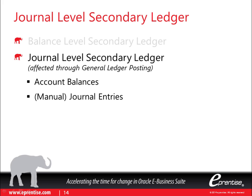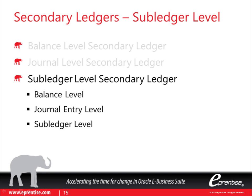Journal-level secondary ledger posting is actually effected through the standard general ledger posting functionality. Next, there are subledger-level secondary ledgers. This is the most transparent of all the secondary ledger types. The subledger-level secondary ledger lets you maintain not only the balance level and the journal entry level available in the first and second types, but it also allows you to maintain the subledger level.